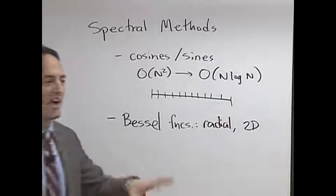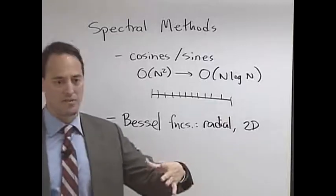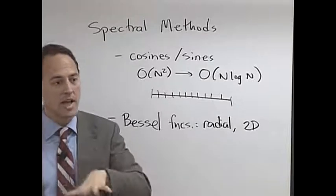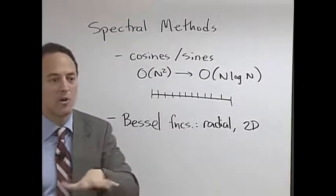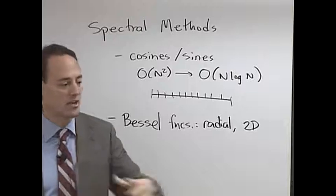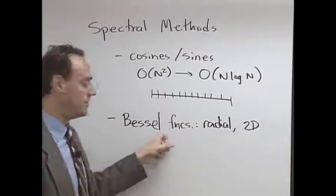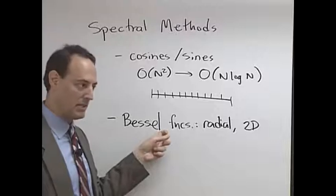So, for instance, a vibrating drum head - if it's a circular domain, then you're going to try to calculate how this vibrating drum head, what are the modes, what kind of sounds you can get on a vibrating membrane. You would use Bessel functions as a natural basis for this.